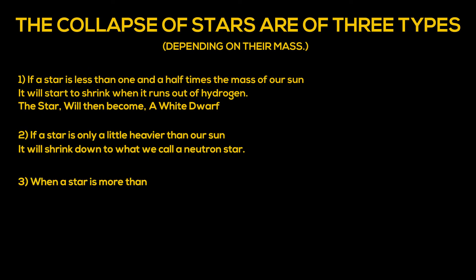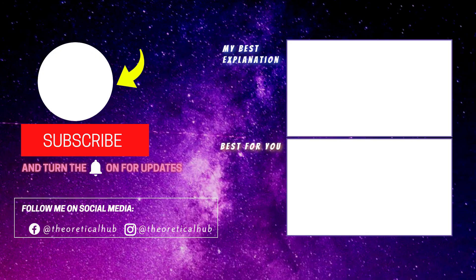When a star is more than three times the mass of our sun, it turns into a black hole. I really don't need to explain black holes, do I? So I now guess that you know what happens when a star collapses and what exactly Collapsars are.